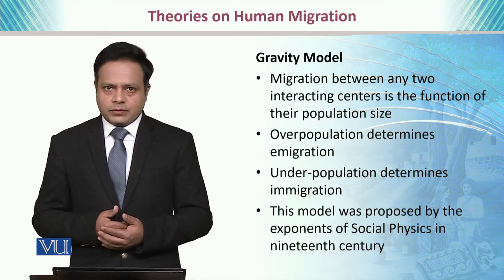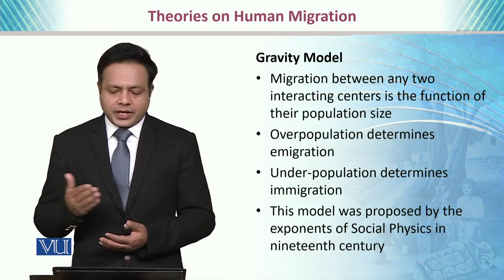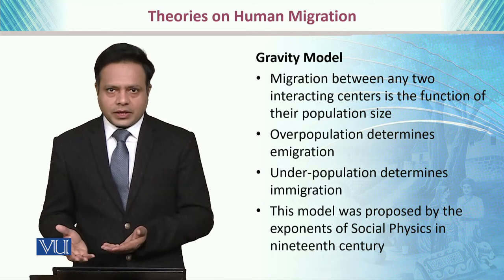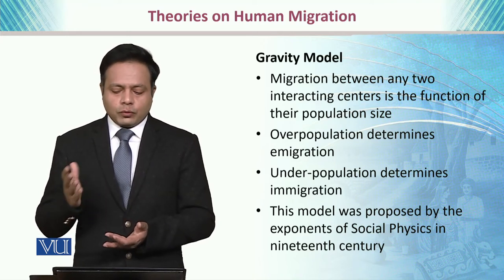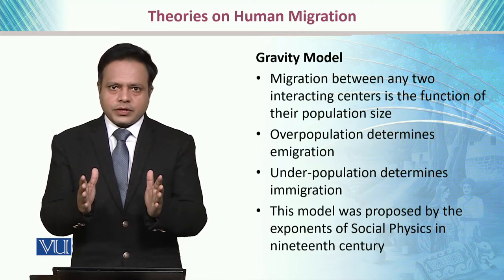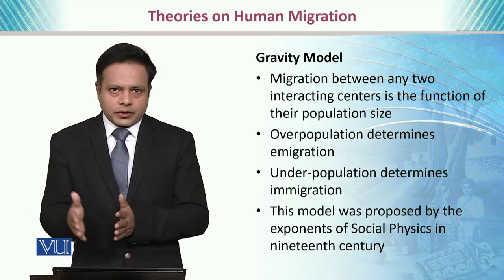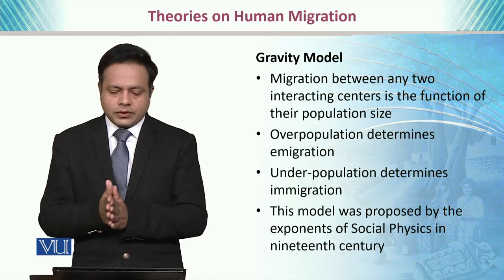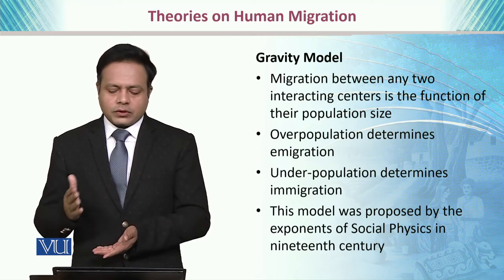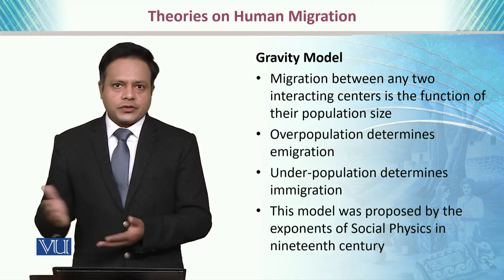Then we have the gravity model, which means that migration between any two interacting centers is a function of their population size. Overpopulation determines emigration — if a certain area has high population density, people tend to migrate, and this usually occurs in urban areas. Underpopulation, on the other hand, determines immigration. This model was proposed by the exponents of social physics in the 19th century.